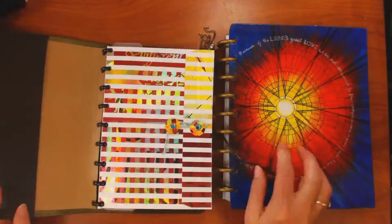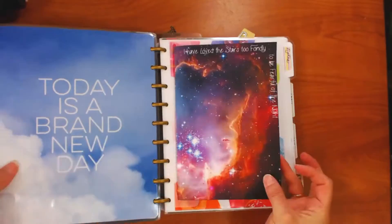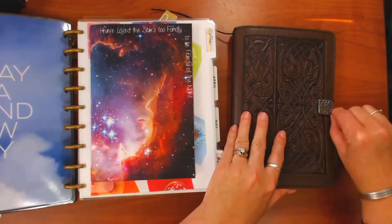Now I want to take that same notebook out of my disk bound art journal, and put it in my Happy Planner. I simply take the adapter, and I snap it into the Happy Planner.